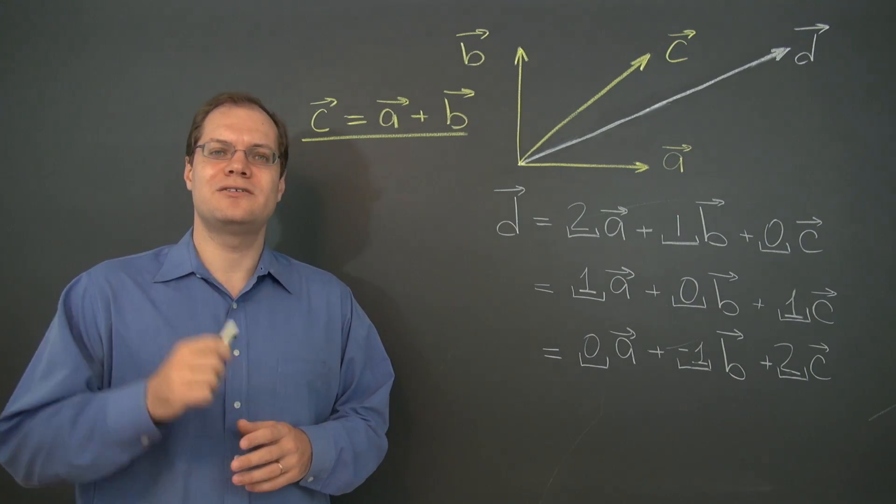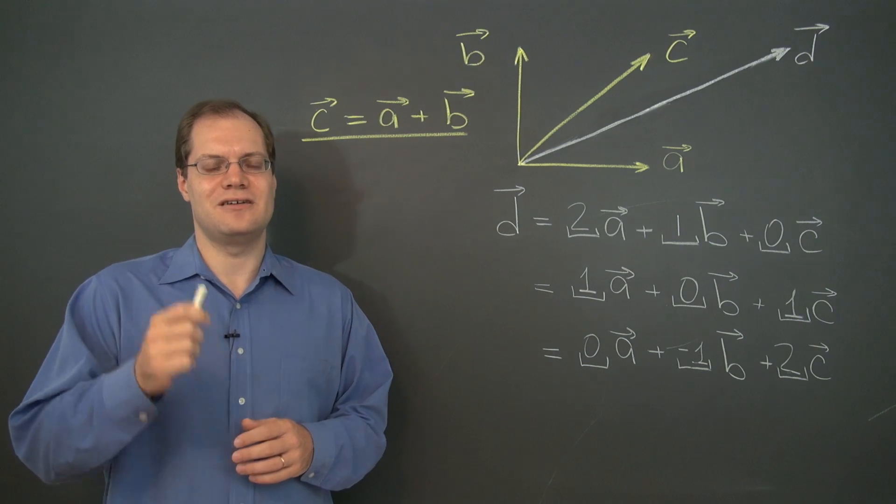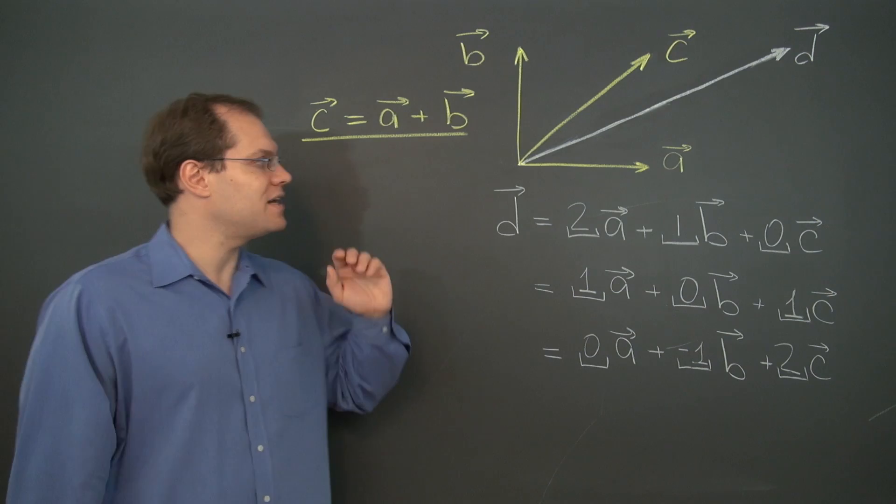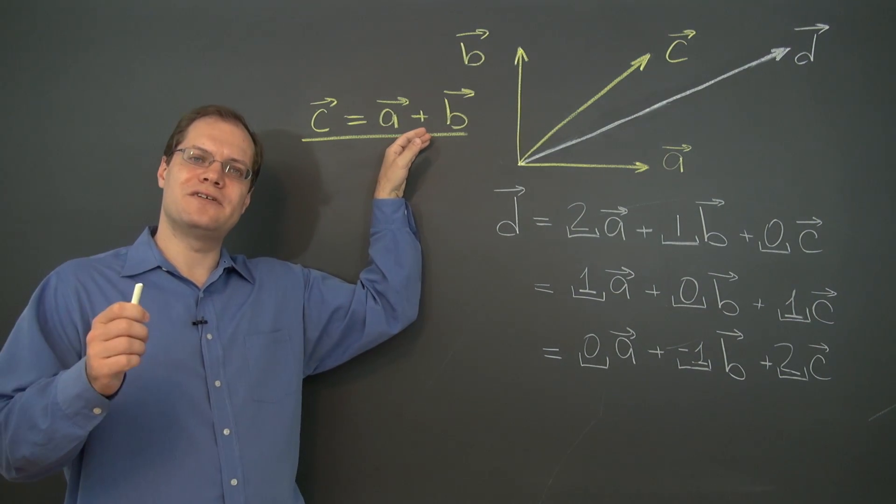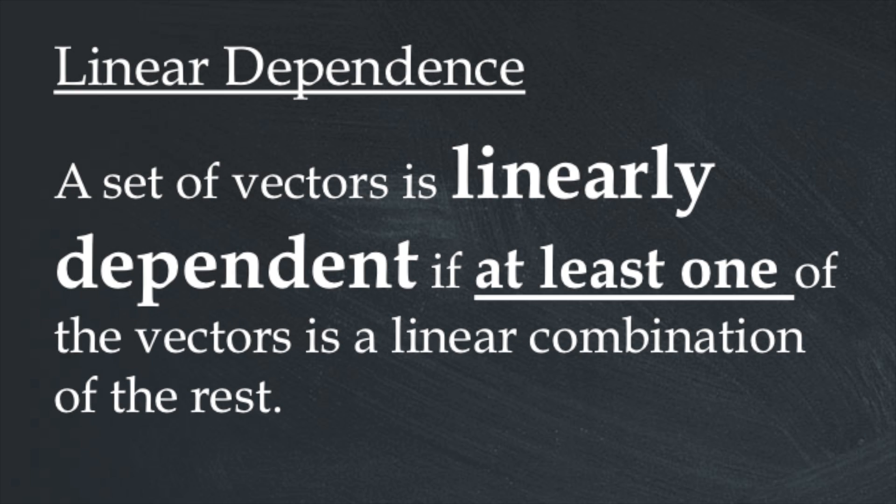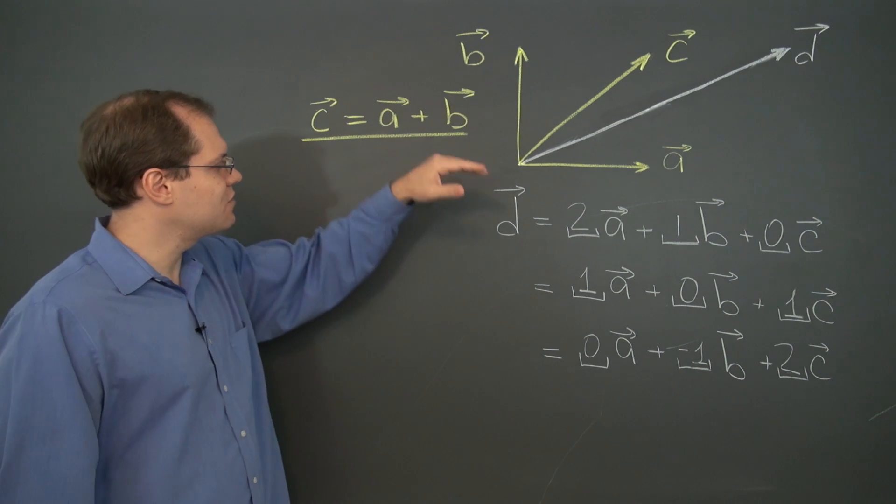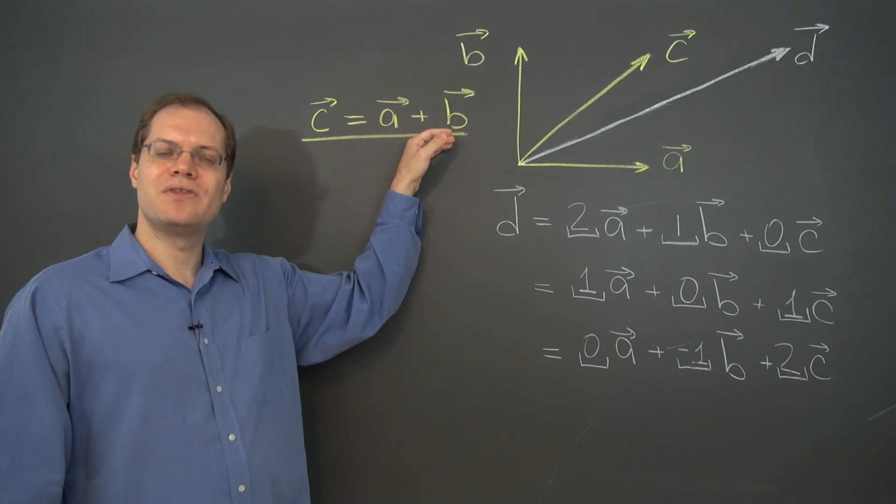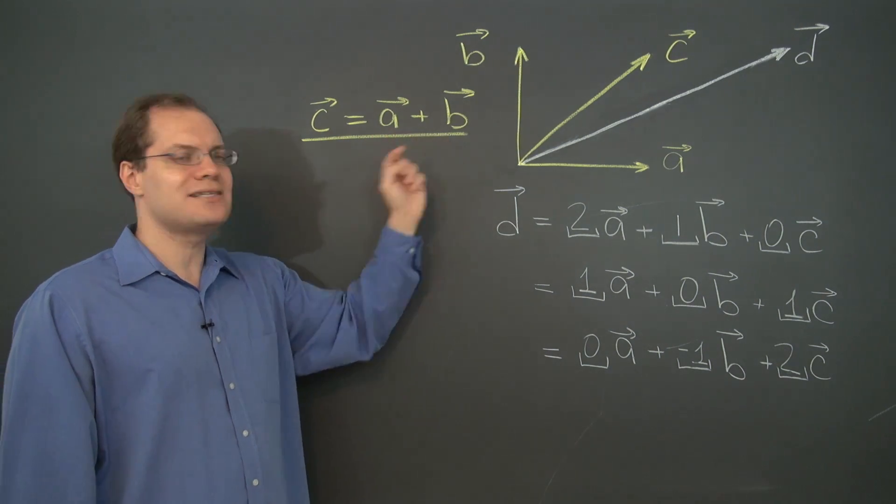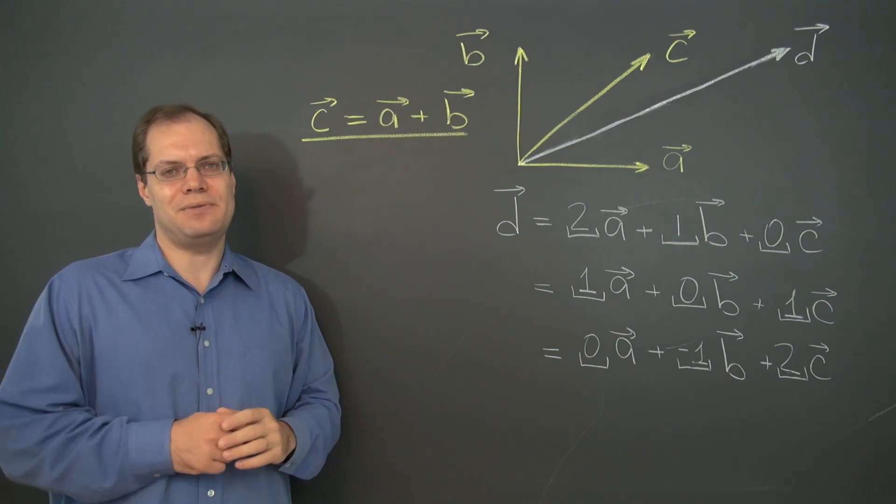Alright, now I'm ready to leave you with a formal definition of linear independence and linear dependence. A set of vectors, in this case we have three, but this definition applies to any number of vectors. A set of vectors is linearly dependent if one of the vectors can be expressed as a linear combination of the rest. The set of vectors a, b, and c is linearly dependent because c can be expressed as a linear combination of a and b.